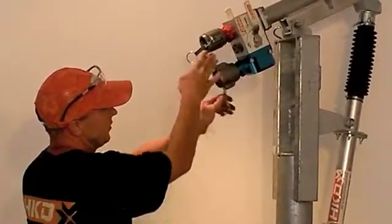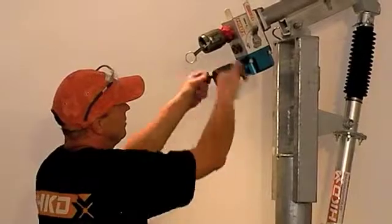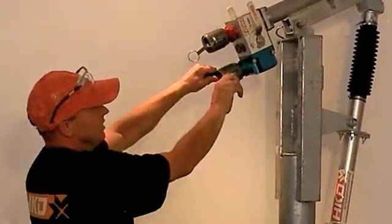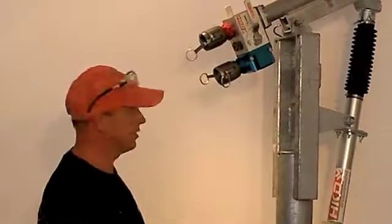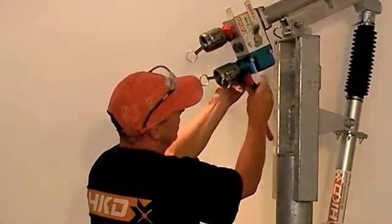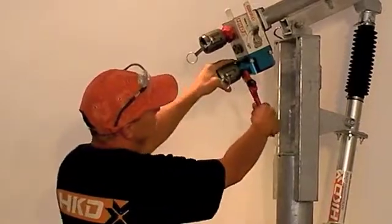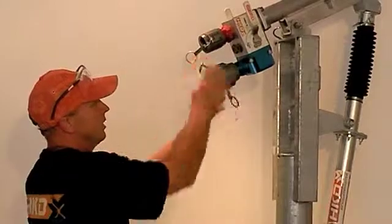You see that spins. Sometimes when they get put back in they get over tightened and then it's hard to get them. So just a pipe wrench on this hex here and then you can spin it out.